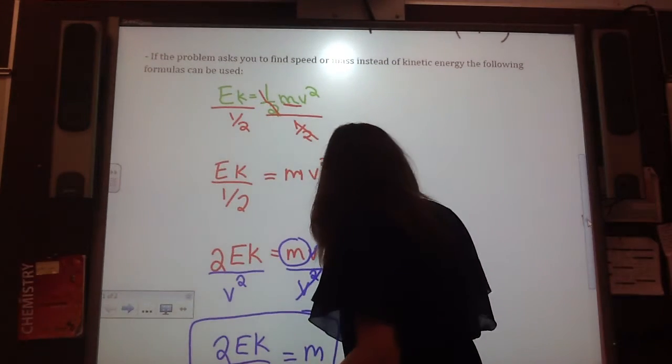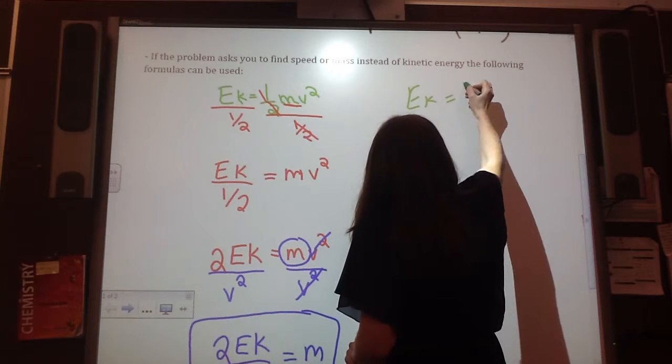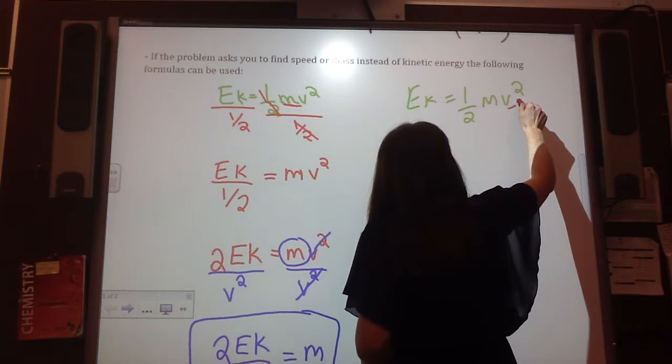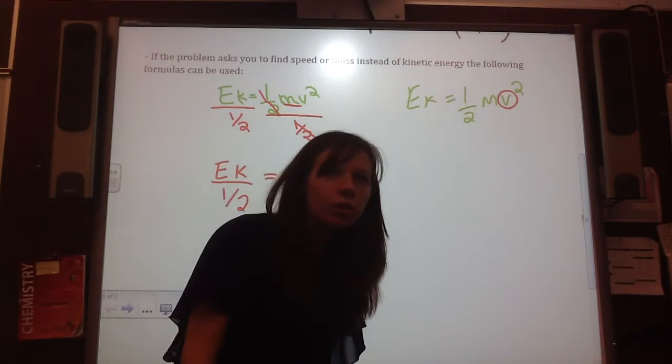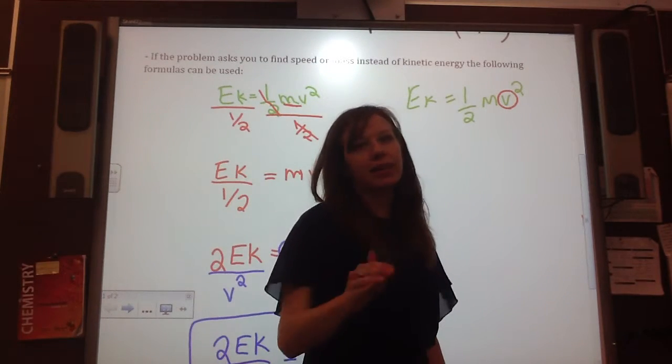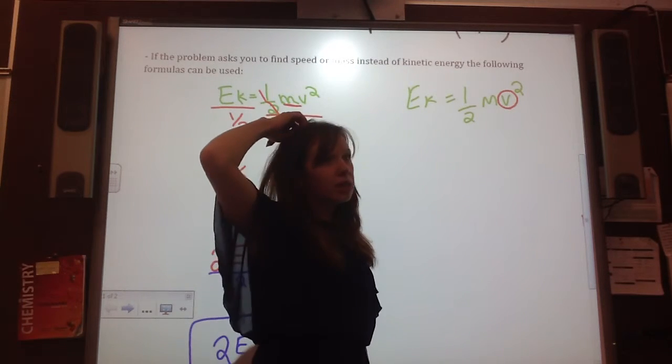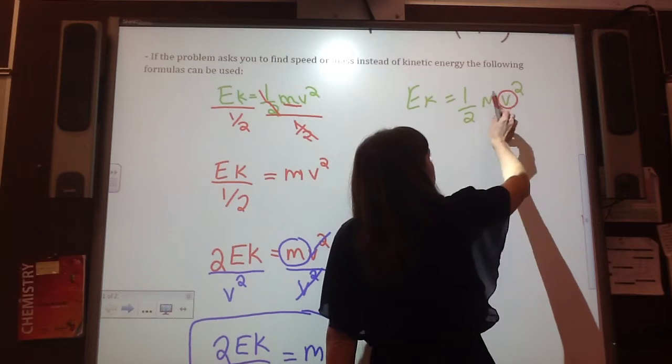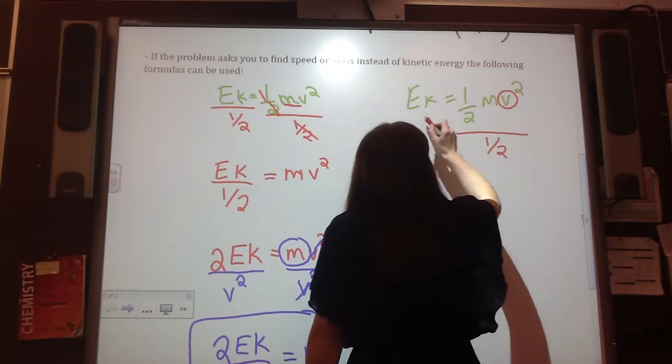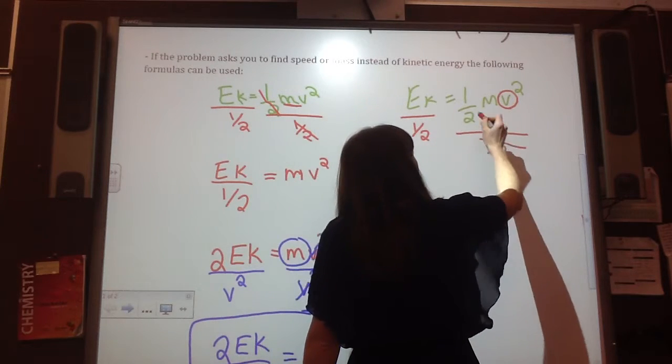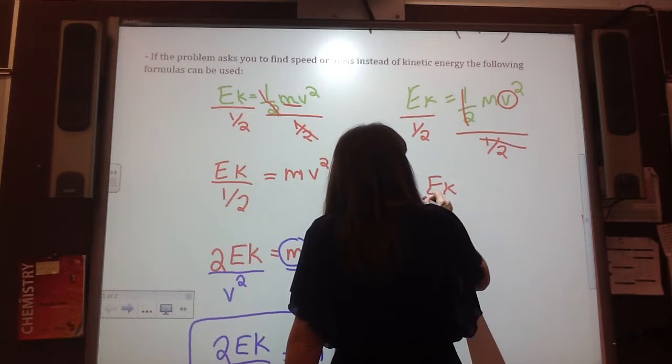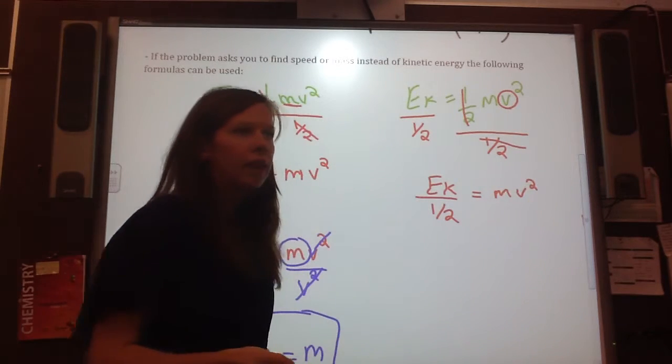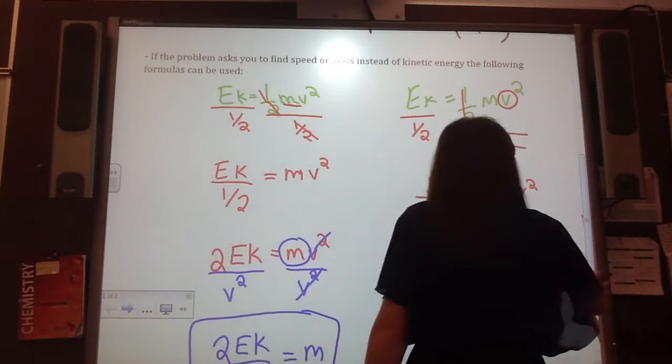Now, what if it's asking for speed? So we start with Ek equals half mv squared. And say I want to solve for v. I want to get v all by itself. Without the squared? Without the squared, but the squared is the very last thing I'm going to deal with. So right now, the v squared is multiplied by m. Or let's deal with the half first again. So right now, it's multiplied by half. So I divide by half. That gets rid of my halves. So I'm left with Ek divided by half is equal to mv squared.